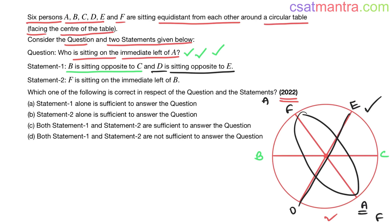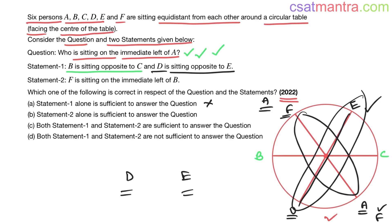When A is here and F is here, the immediate left of A is D. But when A is in the other position, the answer changes. So for a single question we are having two answers — Statement 1 is not sufficient to answer the question.